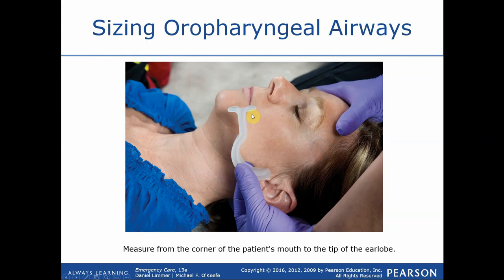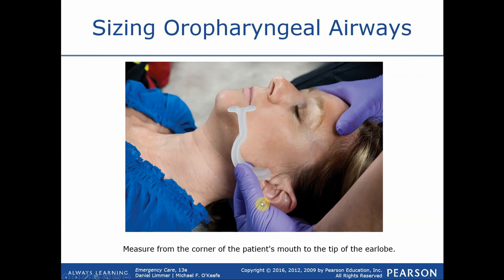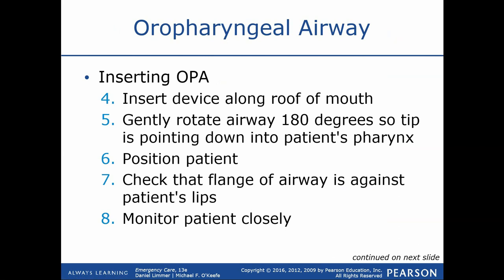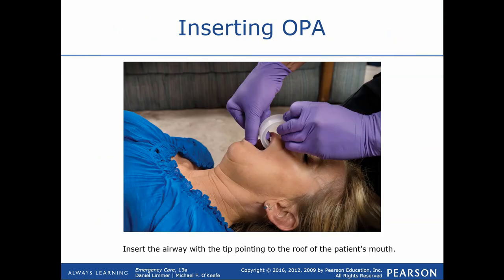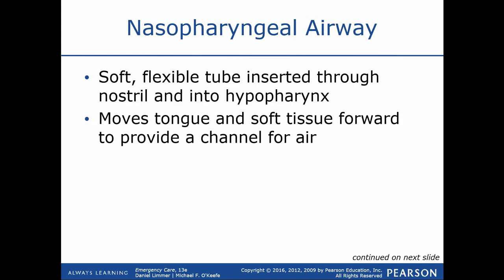We'll practice OPA insertion extensively in class. With small children and infants, we insert it right side up rather than upside down as with adults, and we may use a tongue depressor to displace the tongue. Always have suction ready whenever you insert anything into a patient's mouth — even after assessing for a gag reflex, vomiting can still occur unexpectedly. If the patient improves and their gag reflex returns, simply remove the device — it's not a big deal.